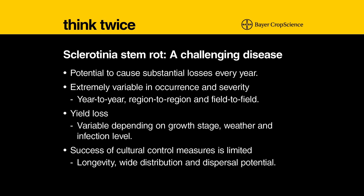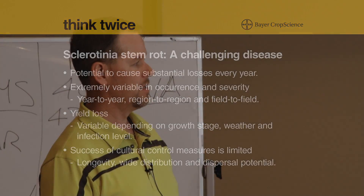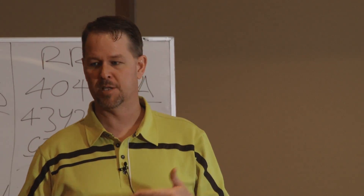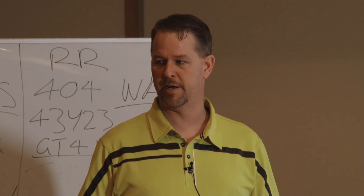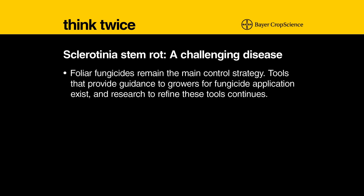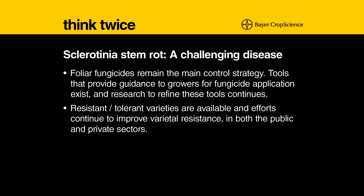Cultural controls are fairly limited. Sclerotia can last a long time in the soil, and ascospores can blow in from neighbouring fields. One thing we didn't really discuss is that this particular disease has a massive host range — pretty much any broadleaf crop can act as a host for sclerotinia. For us, foliar fungicides remain the main control strategy, and we're working on tools that provide guidance to growers for fungicide application and continuing to refine them. Lastly, tolerant varieties are available, and efforts continue to improve varietal resistance in both the public and private sector.